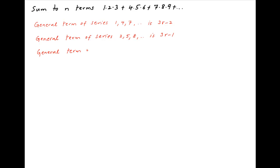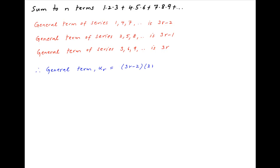And finally the third components of these terms in the given series are 3, 6, 9 and so on, and therefore the third component of the general term of the given series is 3r. Putting these three components together, the general term ur of the given series is equal to (3r minus 2)(3r minus 1)(3r).